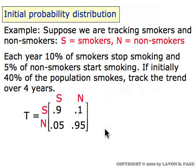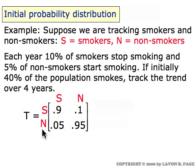The transition matrix — thinking of smokers as state one and non-smokers as state two — has first row 0.9, 0.1. For smokers, at the end of a year ninety percent will still be smokers and ten percent will have quit. For non-smokers at the end of the year, five percent will have taken up smoking and ninety-five percent will still be non-smokers. That's the transition probability matrix as determined from the information given.